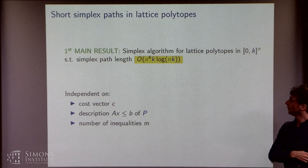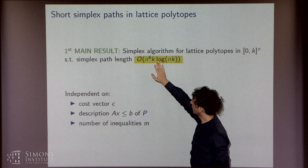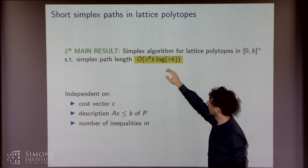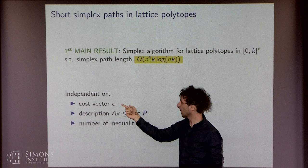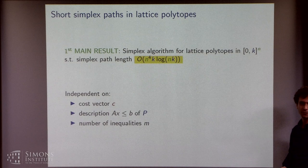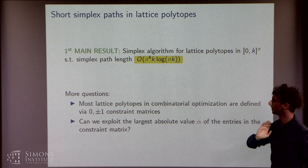So this brings me immediately to the first results that we have. I will tell you more later, but I just want to give you the results. We're able to give a simplex algorithm that reaches a simplex path length of n^4 k log(nk), which therefore is good because it's polynomially far from our target, essentially nk. And in particular, I stress again that it's independent on the cost vector c, on the description of P, and the number of inequalities.